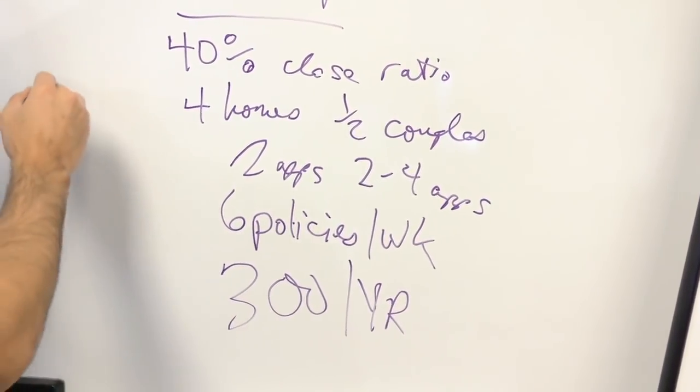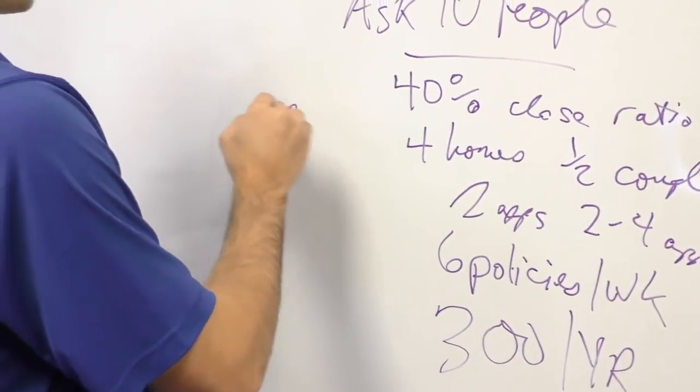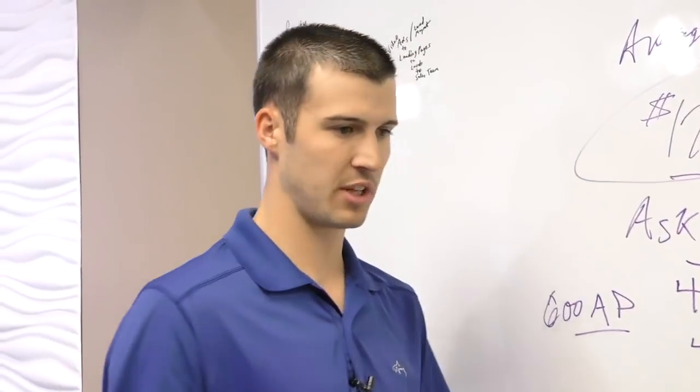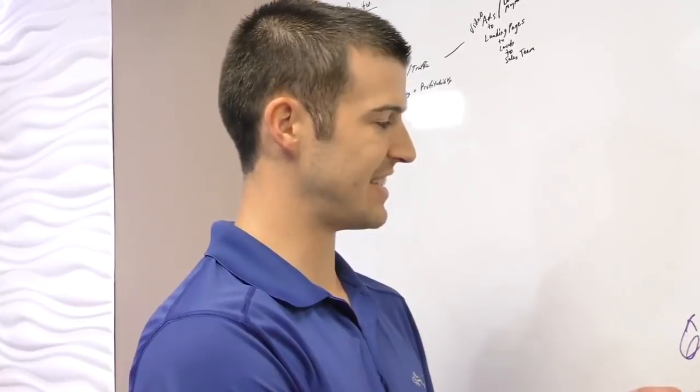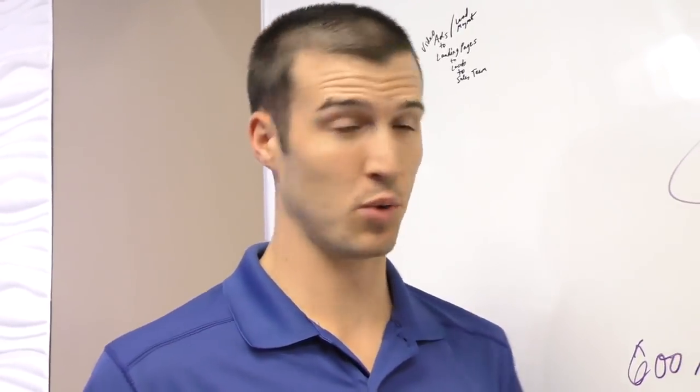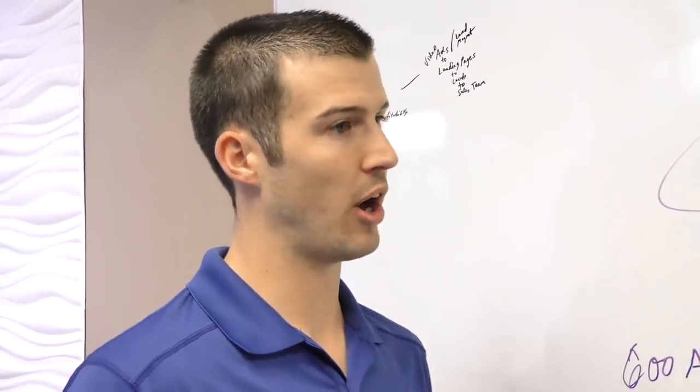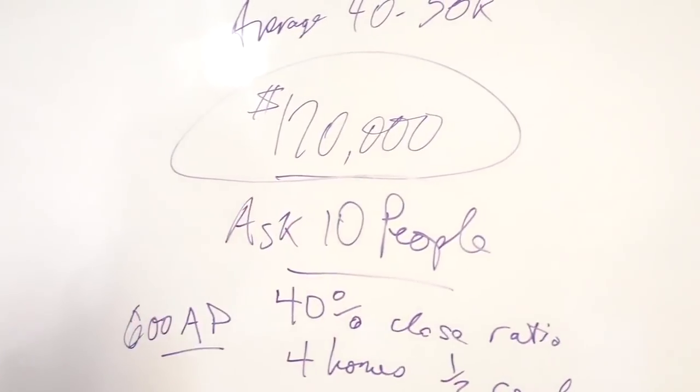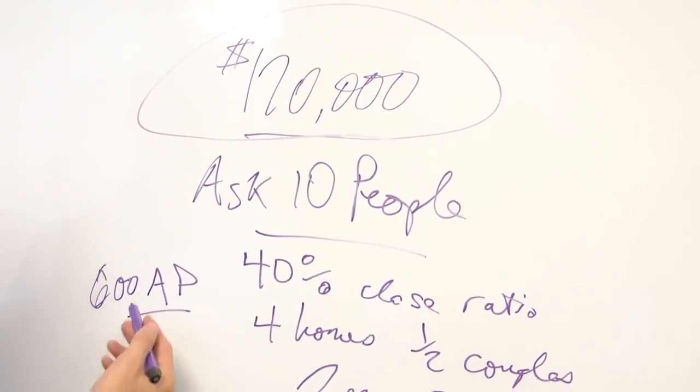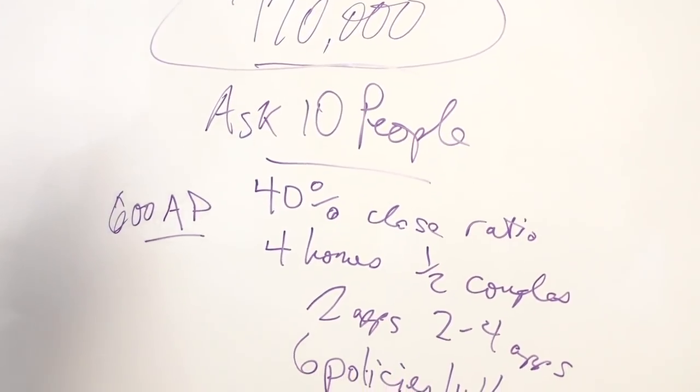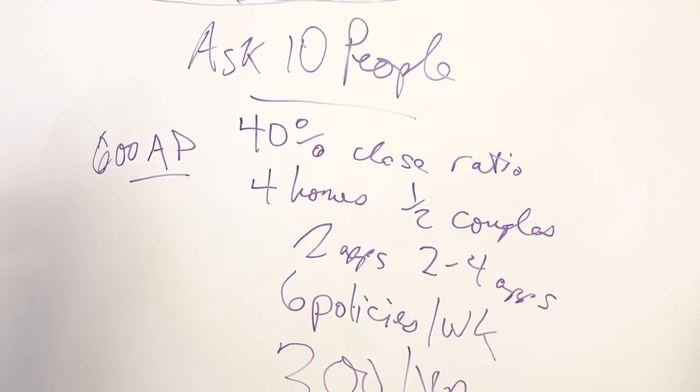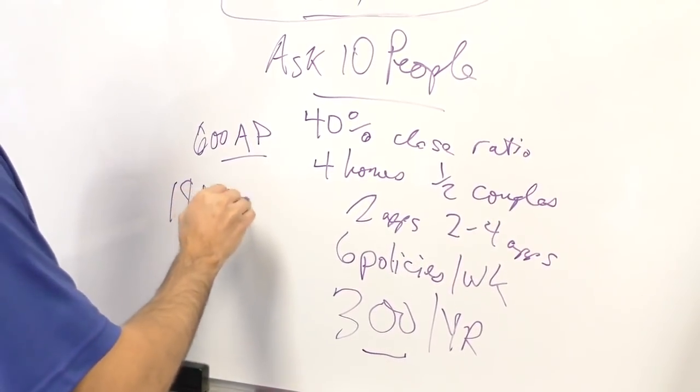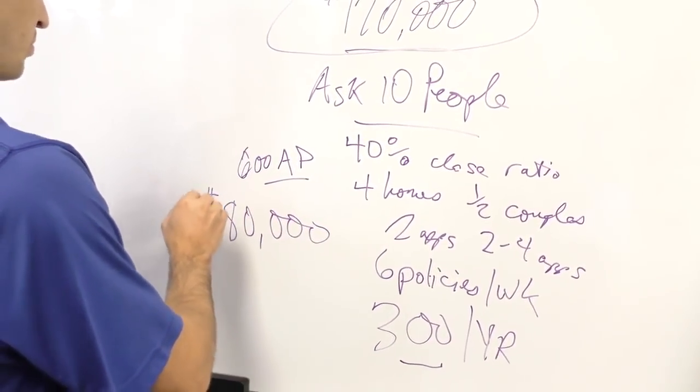Let's say you're selling final expense and you average like six hundred of annual premium, which is also very low. That's the average size per sale. Say the person pays fifty bucks a month, that's six hundred dollars per year of annual premium. I'm trying to be conservative so everyone can make this. If I sell three hundred policies times six hundred, you're at a hundred and eighty thousand dollars of annual premium.